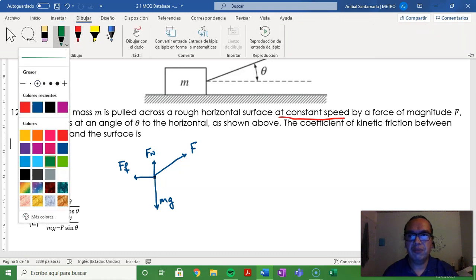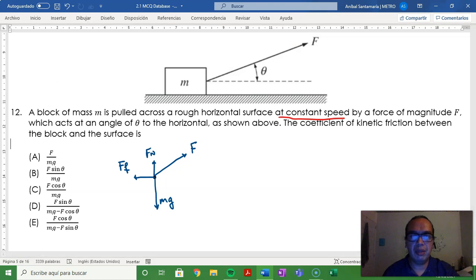you have that forces on the same axis add up to zero. So Fx minus friction has to be equal to zero, which is the same as saying F cosine of the angle is equal to mu times Fn.